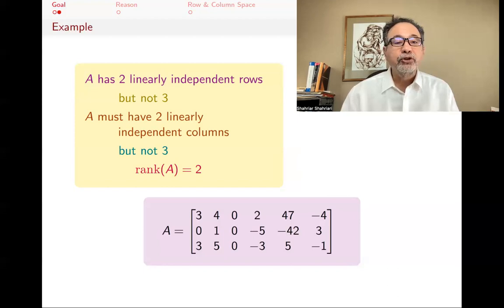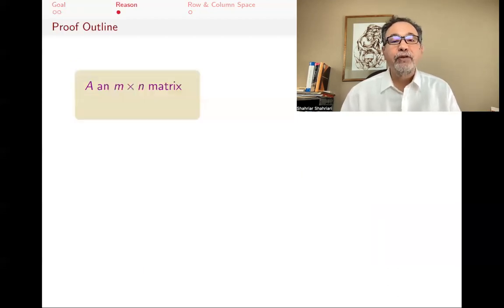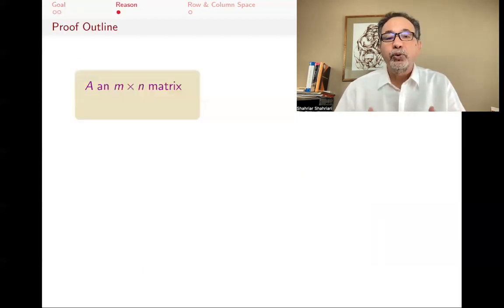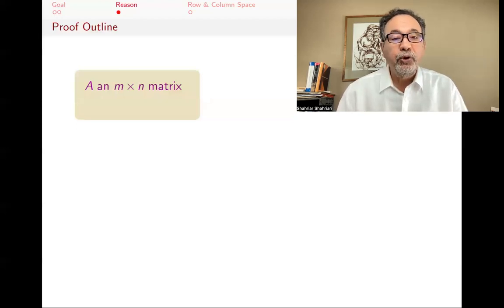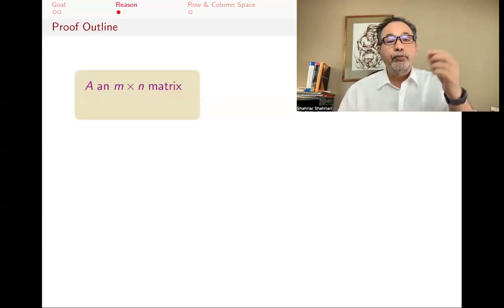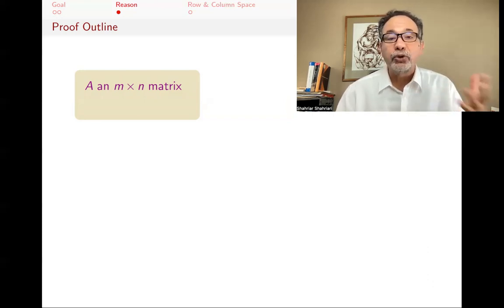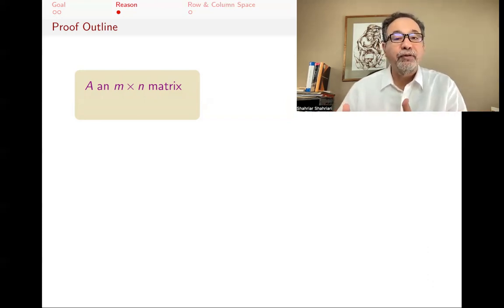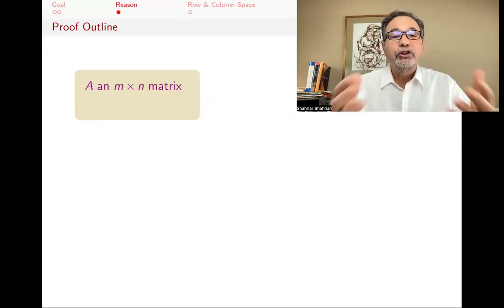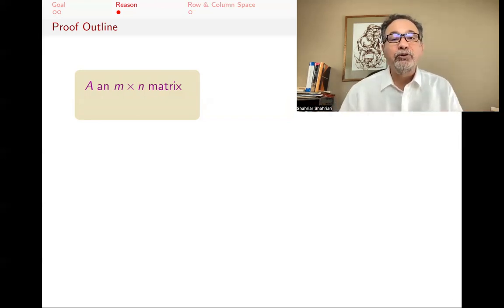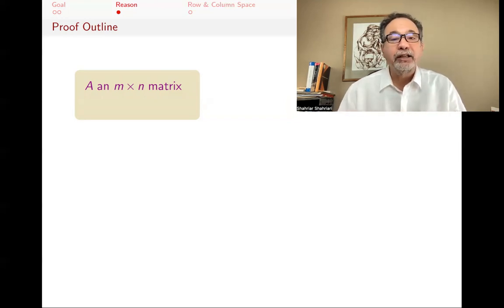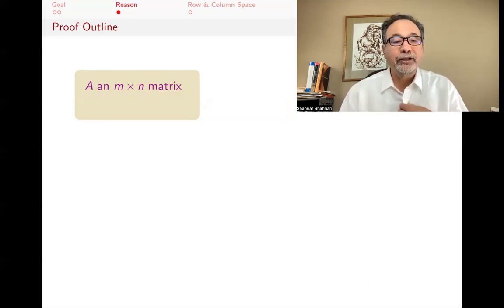Before going on, let me give you an outline of the proof — an intuitive, quick view of how this proof would go. After hearing this, maybe stop the video and try to fill in the details yourself, and then you don't have to watch the rest. The rest of the video will unpack this in detail and put it in the context of things like row space, column space, and then discuss row rank and column rank.